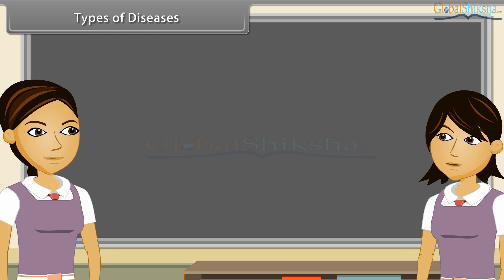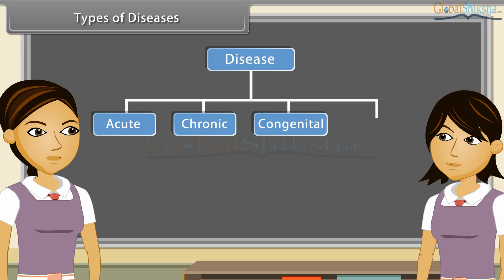Can you tell me how many types of diseases are there? Yes, human diseases are grouped into four categories: acute, chronic, congenital, and acquired.